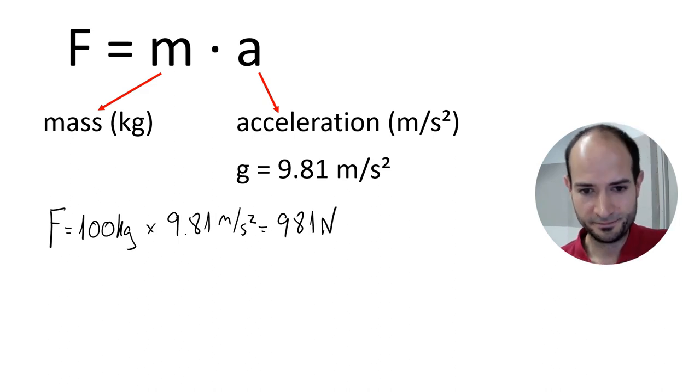Now, it's quite a big number already, and we haven't considered the self-weight of the scaffold and all other loads. So, to make it smaller, we will work with kilonewtons. 1 kilonewton being 1000 newtons. So, this equals 0.98 kilonewtons.